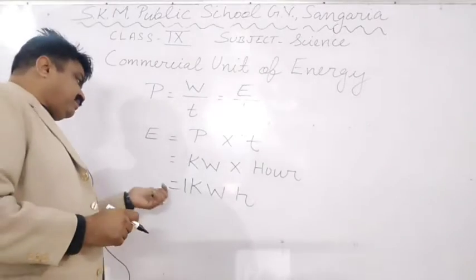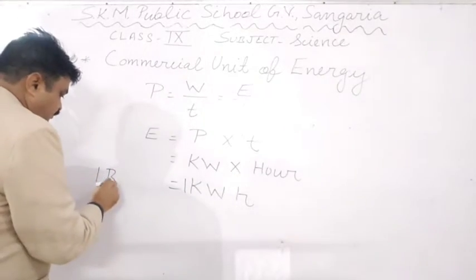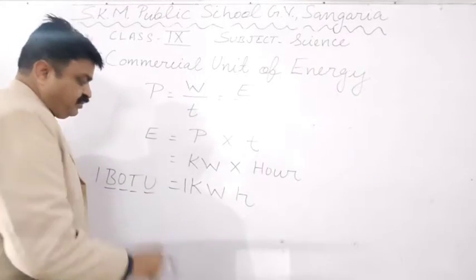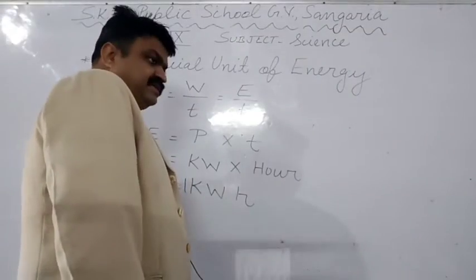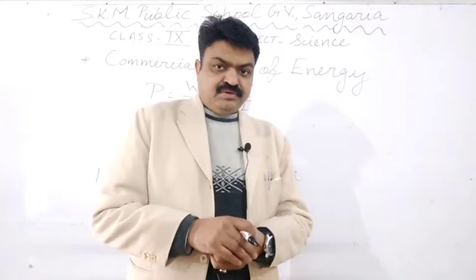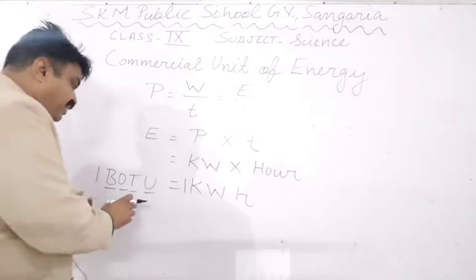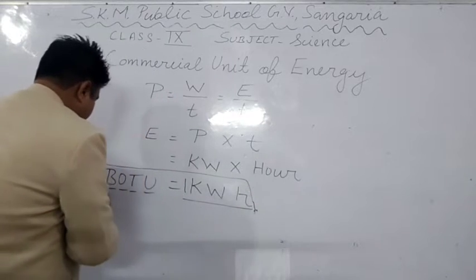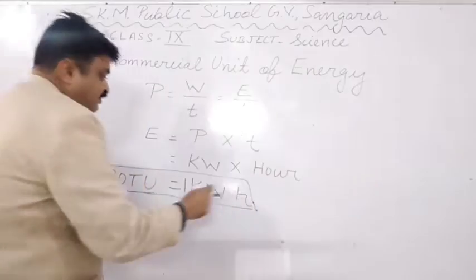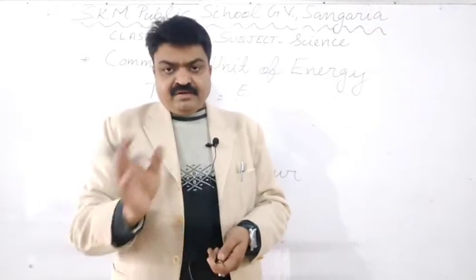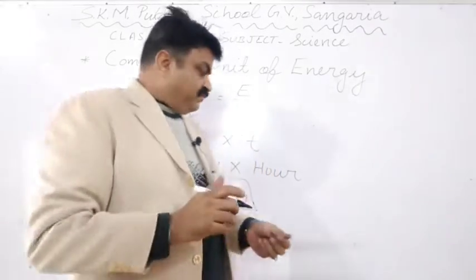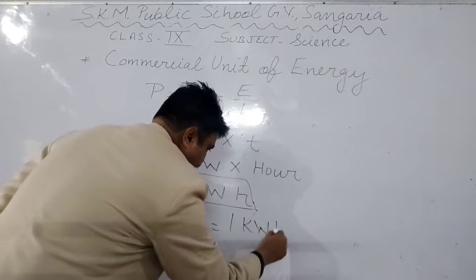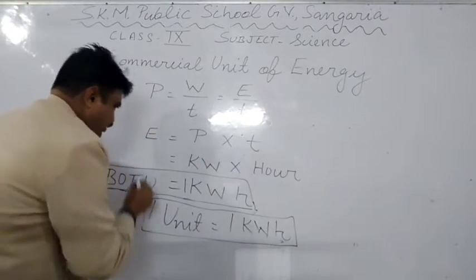One kilowatt hour is always equal to one BOTU — Board of Trade Unit. The electricity that we consume at home, in industries, or in schools is measured using this. So one unit is always equal to one kilowatt hour, and this is the commercial unit of energy.